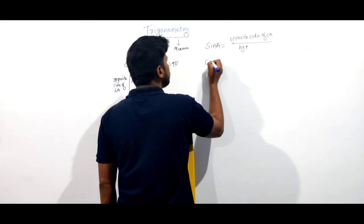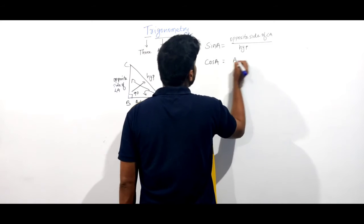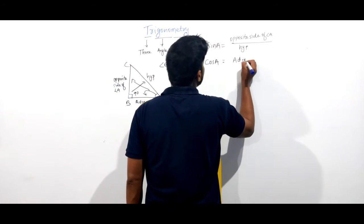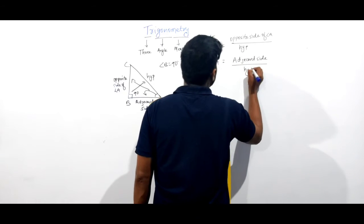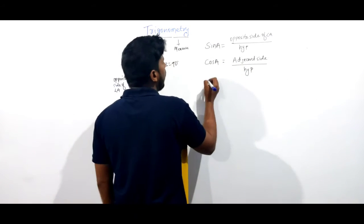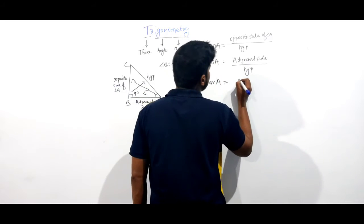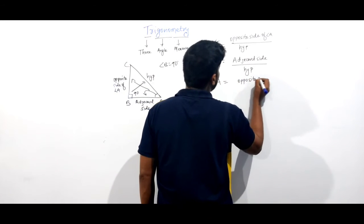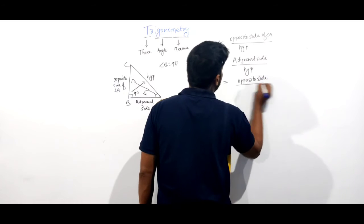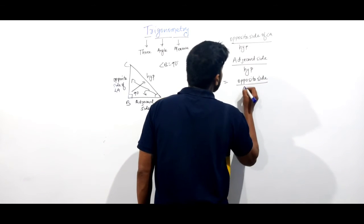Second ratio is cos A. It means adjacent side by hypotenuse. And tan A is equal to opposite side by hypotenuse.